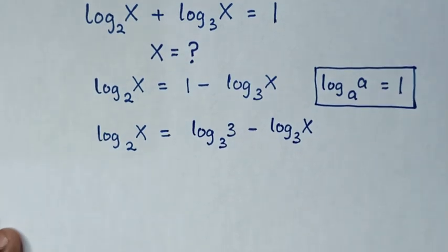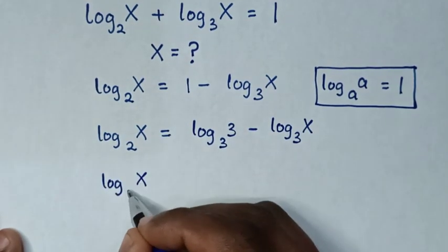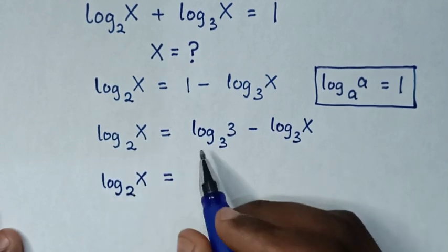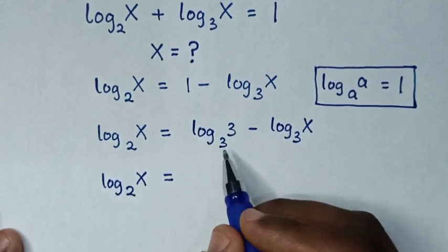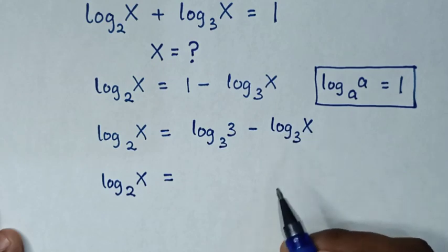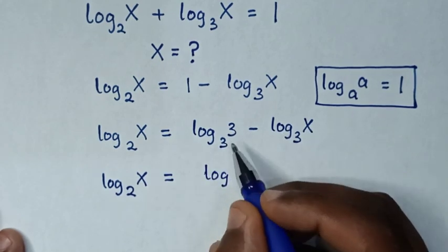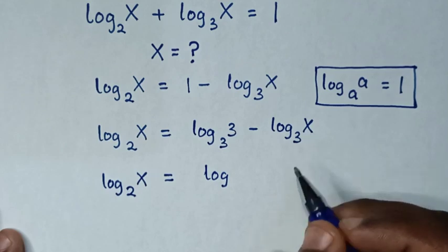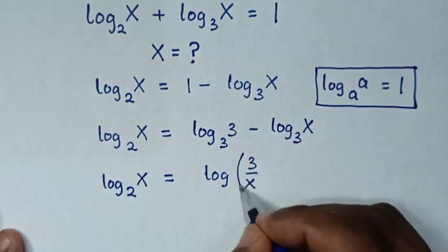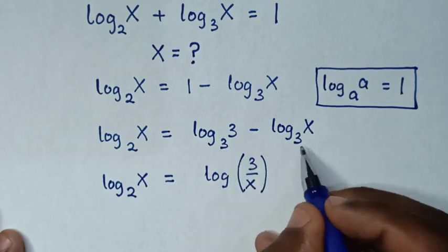Then it will be log of x base 2 is equal to — since log of 3 base 3 minus log of x base 3 is the same as log of (3 over x), with common base 3.